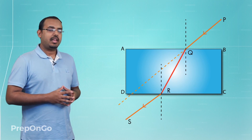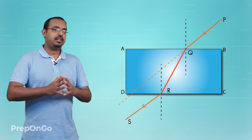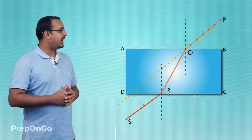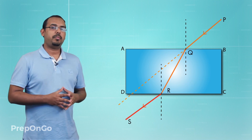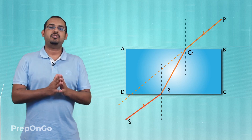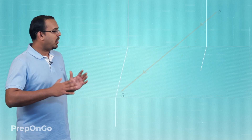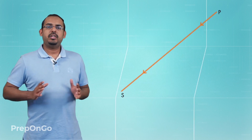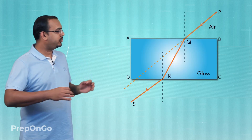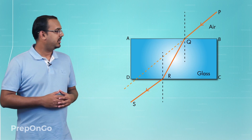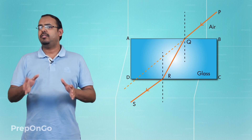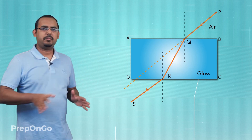Once the light enters the glass slab, it again starts following a straight line path. When the light comes out of the glass slab, it again deviates from its path, but after coming out it continues to travel in a straight line path. Had there been no glass slab, the light would have traveled in a straight line. With the glass slab in position, the light took a zigzag path, though traveling in a straight line in certain segments.